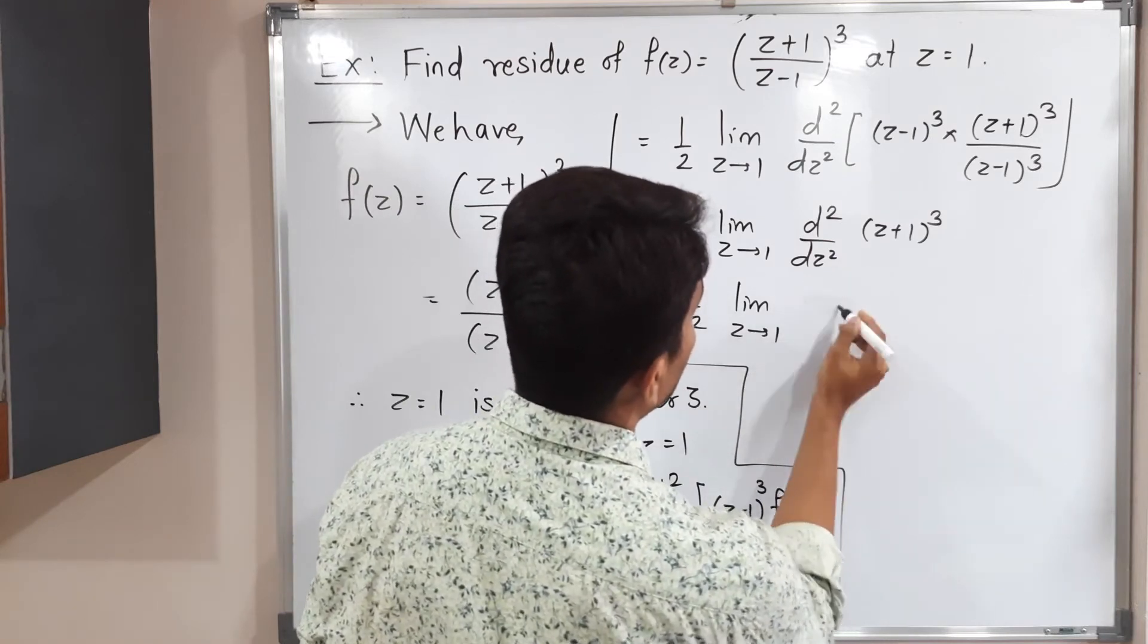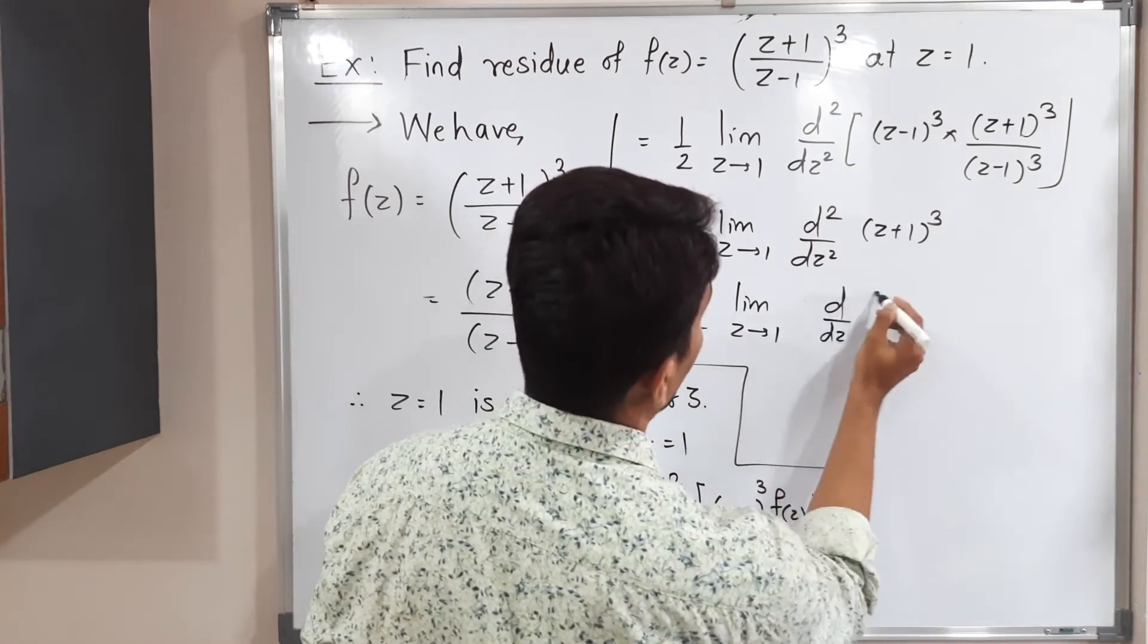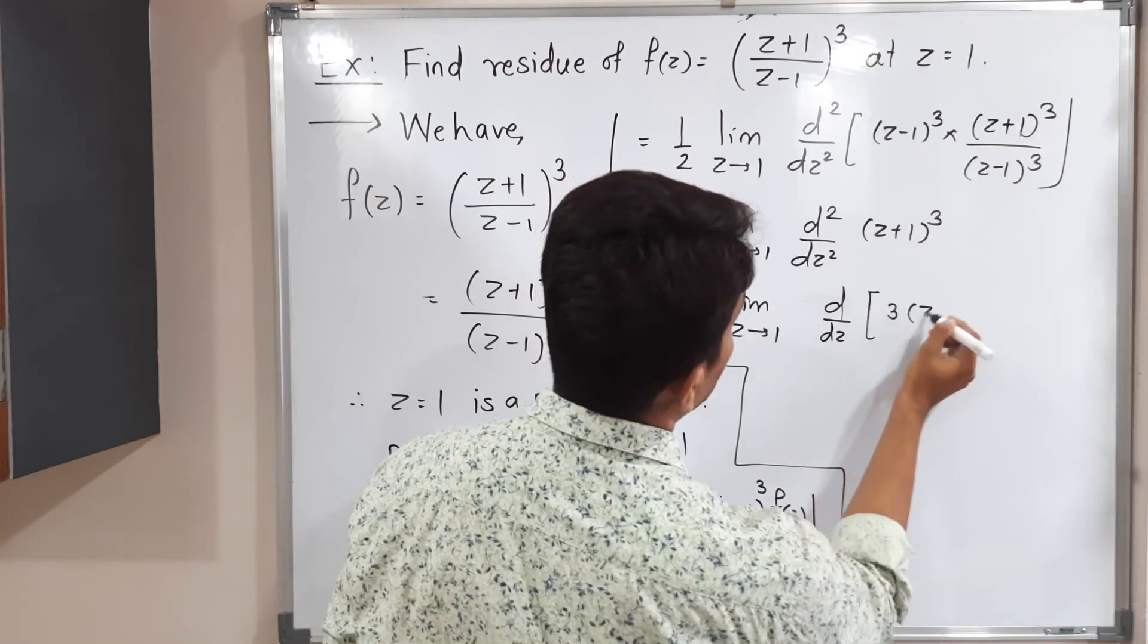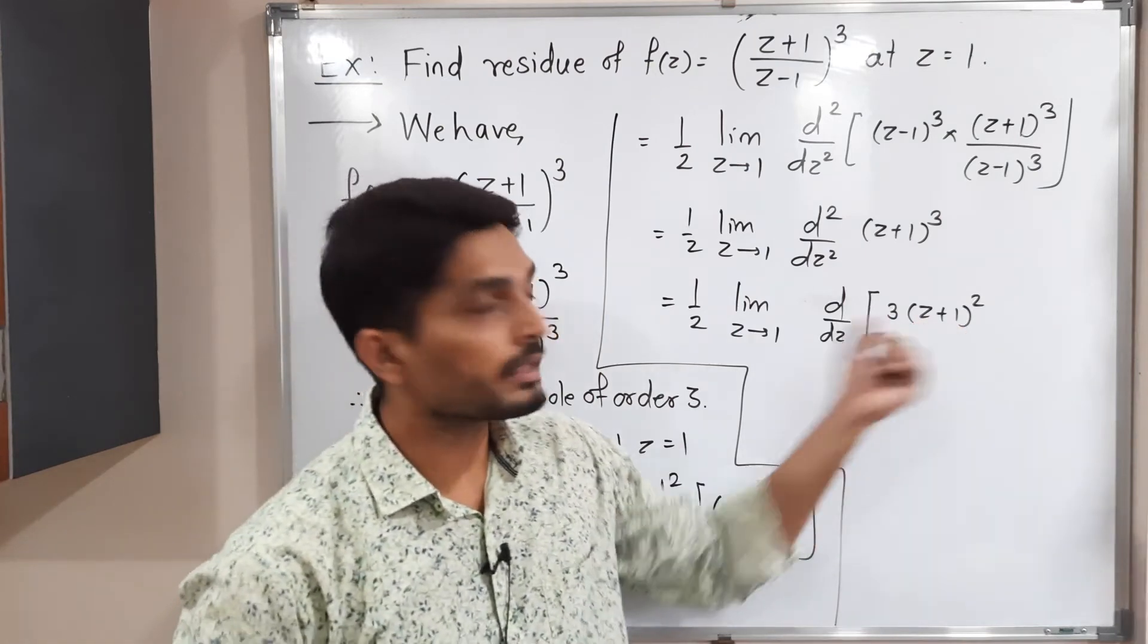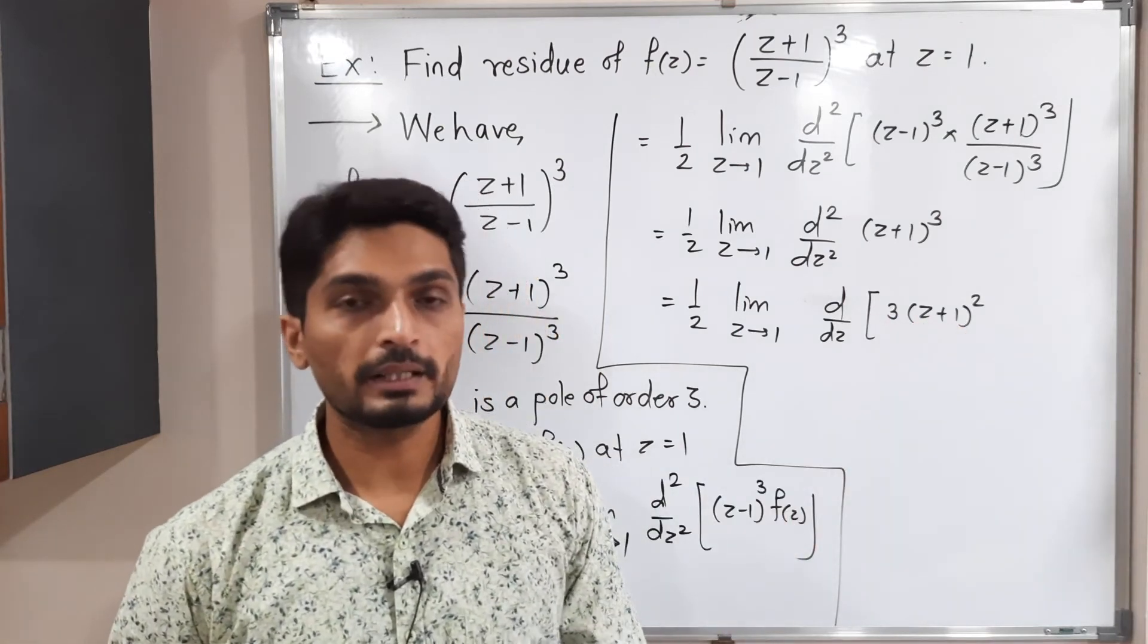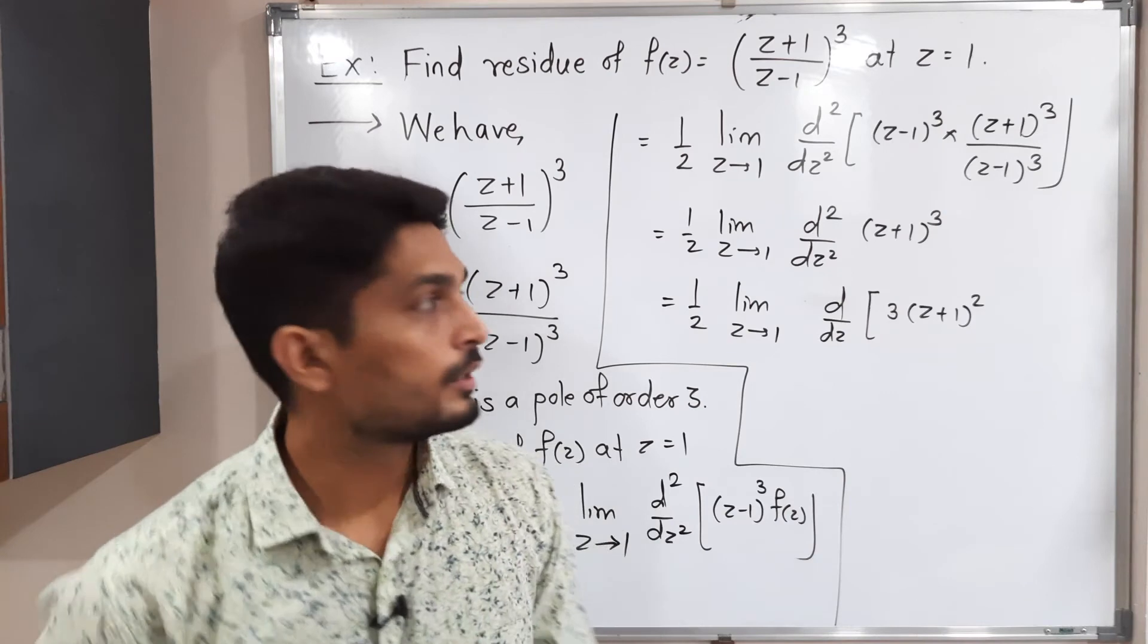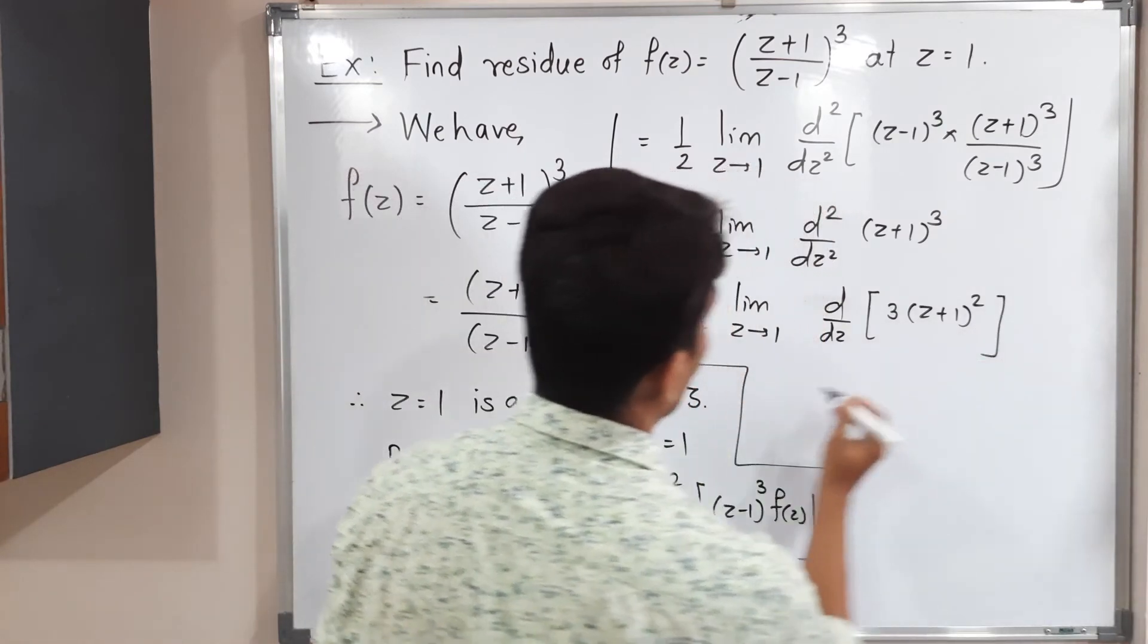So its derivative will be 3. Let me write d by dz. Since only one derivative we have found out, 3(z plus 1) square will be there. First derivative only we found out. And again derivative of this bracket, but the derivative of that bracket is 1, so I will not write it. I will keep as it is.